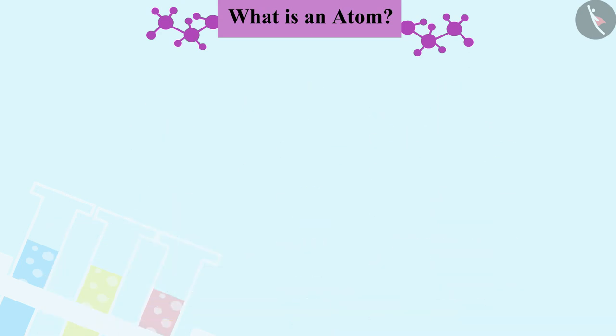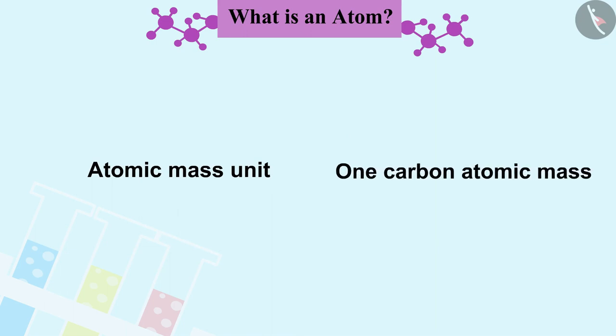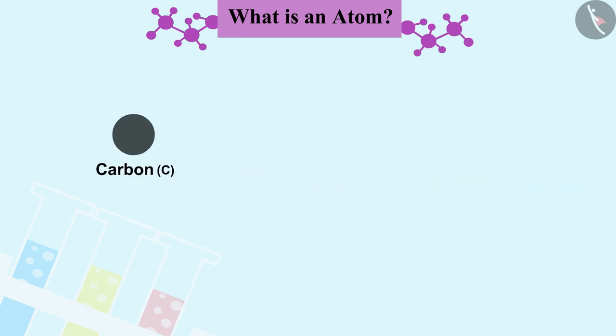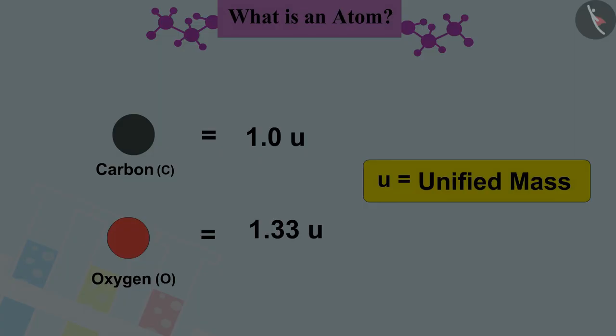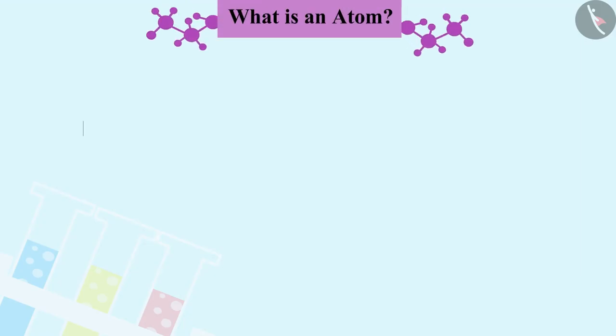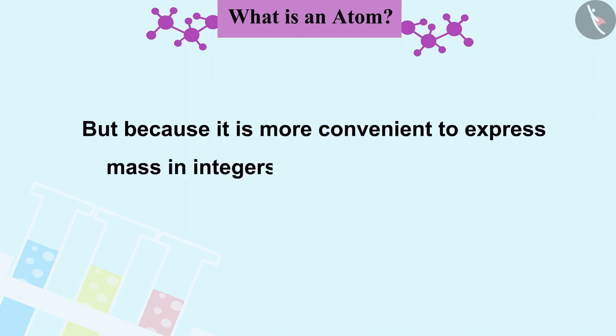Now if we consider atomic mass unit to be equal to one carbon atomic mass, then we will assign carbon atomic mass to 3.0 u and oxygen atomic mass to 1.33 u, where u is the unified mass. But because it is more convenient to express mass in integers or nearly integers, later scientists researched different atomic mass units.